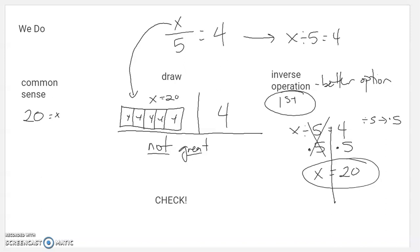So let's check real quick. We need to make sure that X divided by 5 equals 4 is true. If we substitute in a 20 for X, 20 divided by 5 should equal 4. And, of course, it does. Check. Smile. Yay! Good job.